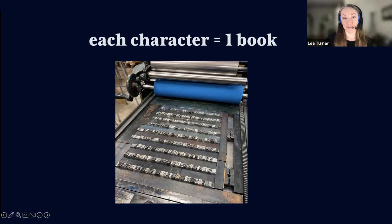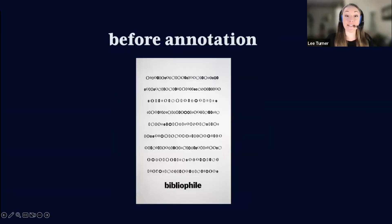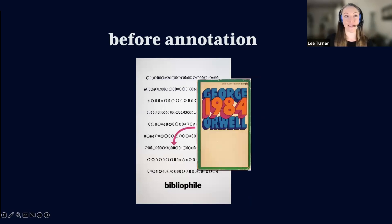And here we see our 232 books as individual pieces of type. And here we see 1984 on the press bed. This is the print before it gets marked up with the additional data points. Each character is a book and my choice in which O or 0 represents which book was arbitrary. The characters serve as containers for the information to come.